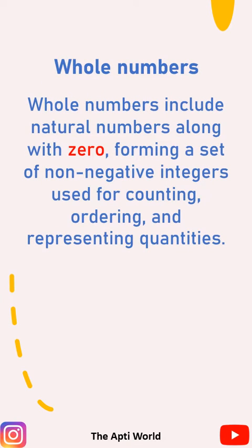Before going ahead, let's first understand what whole numbers are. Whole numbers include natural numbers along with 0, forming a set of non-negative integers used for counting, ordering, and representing quantities.